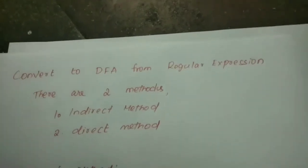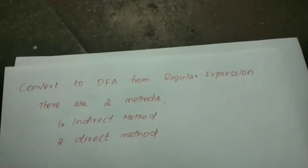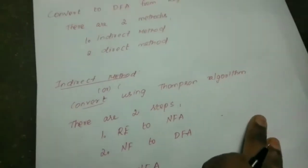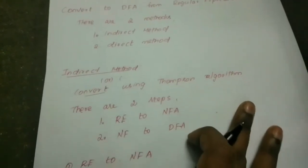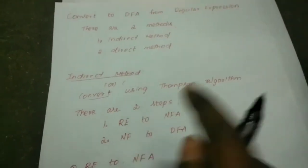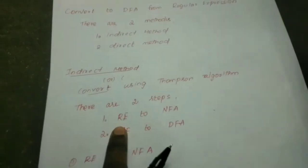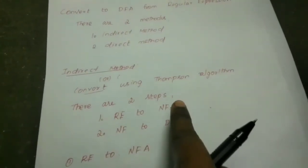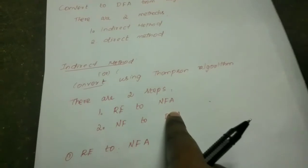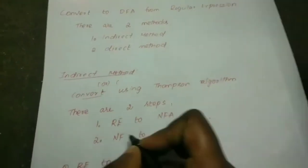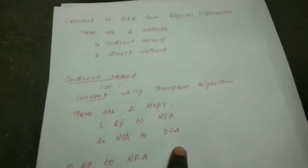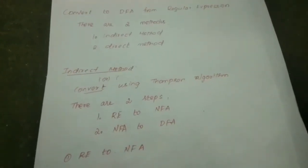The first method — the indirect method — is otherwise known as conversion using the Thompson algorithm. In this algorithm, it involves two steps. First, we have to convert the regular expression to the NFA, that is non-deterministic finite automata. Then the NFA is converted into DFA by finding epsilon closure.